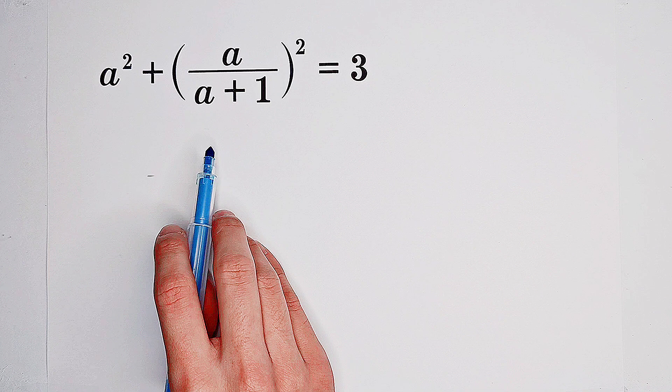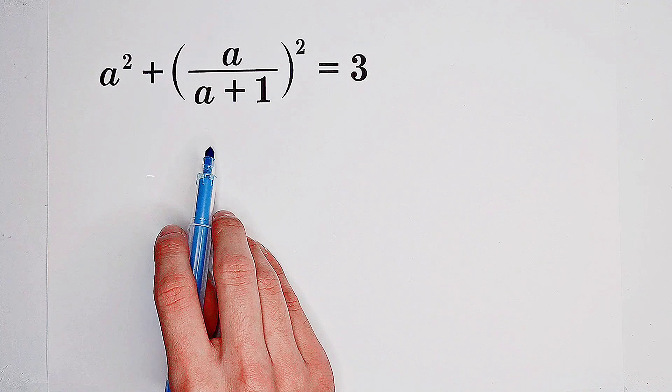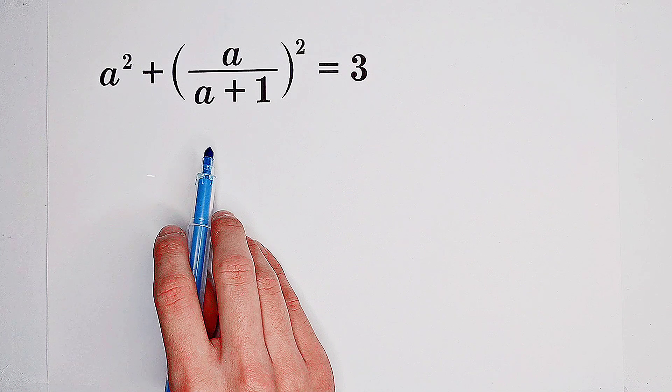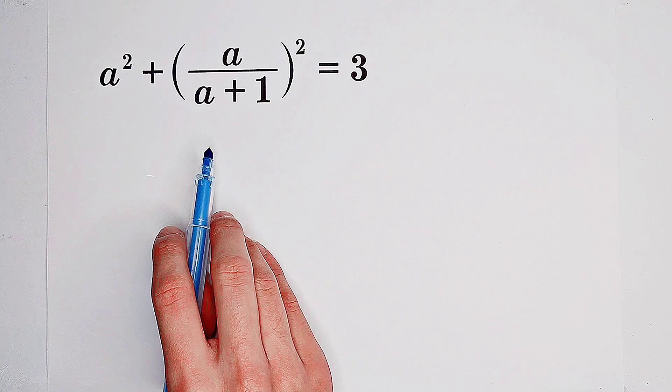Since the left hand side is a sum of two squared terms, two squares, what we can do is to substitute.